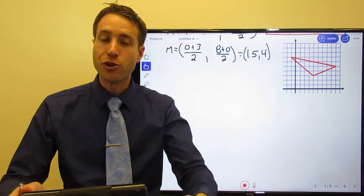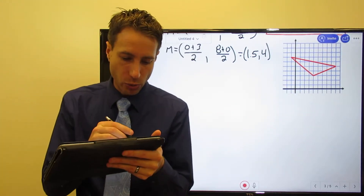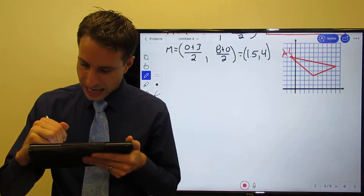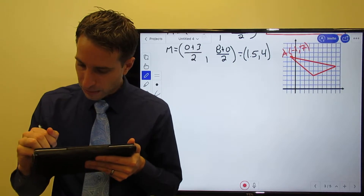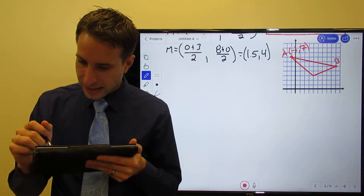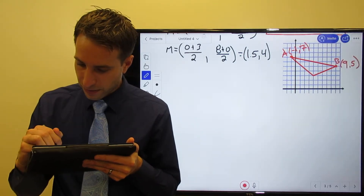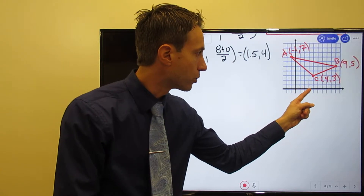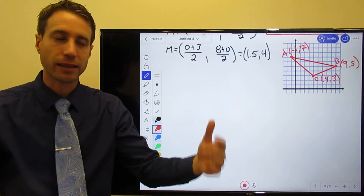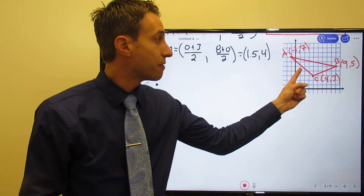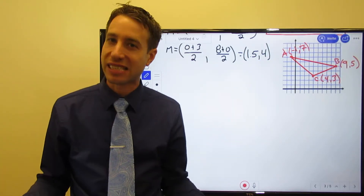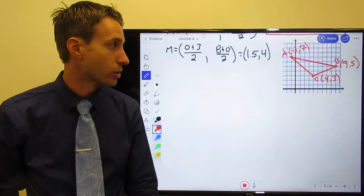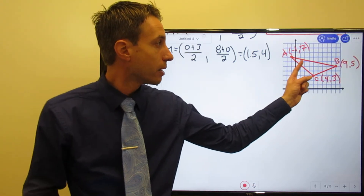The centroid is at (3, 4). Now I've given you another triangle — please try it on your own and come back to check. Let's run through it: A is at (-1, 7), B is at (9, 5), and C is at (4, 3). Again, none of these lines are horizontal or vertical, so you have to use the midpoint formula.